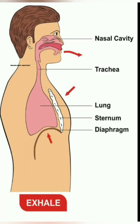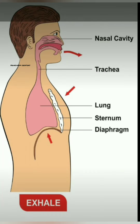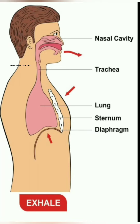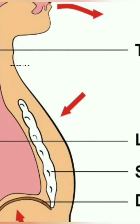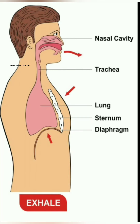The second step is exhalation. During exhalation, the diaphragm which was contracted during inhalation now relaxes and returns to its normal state. It attains its dome shape and moves towards the chest cavity. Because of this, the volume of the chest cavity decreases. So the pressure between air molecules in the lungs increases. Diffusion takes place and air molecules move from the lungs to outside. This process is called exhalation.